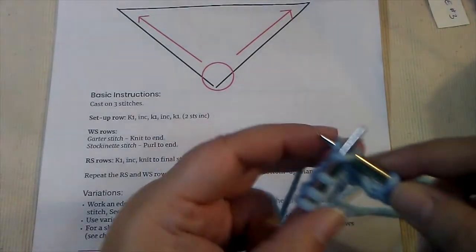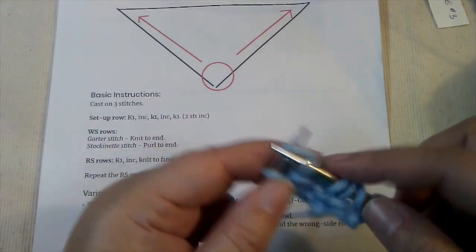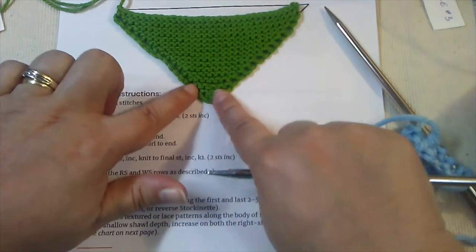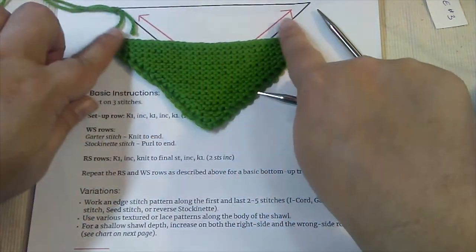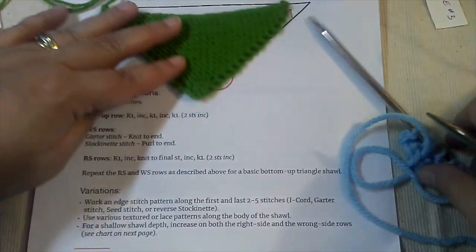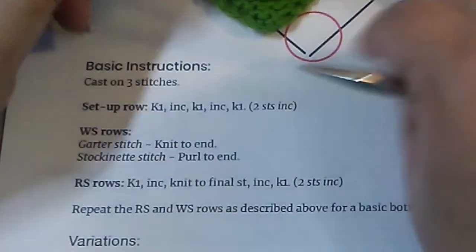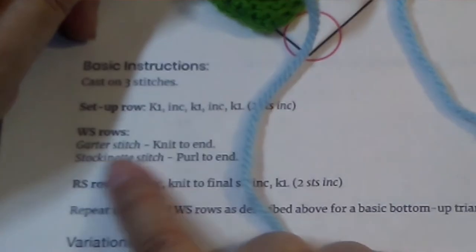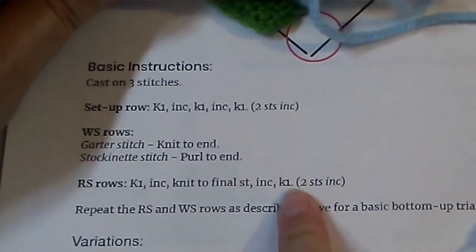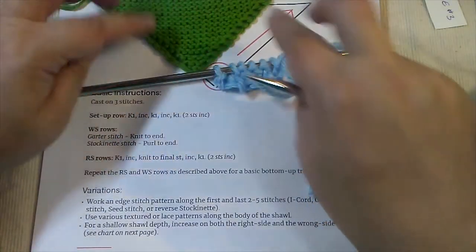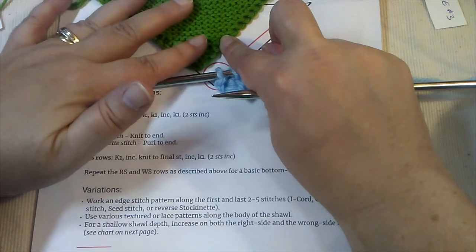Then there's our right side row. We knit one, we increase—I'll work a yarn over—knit to the last stitch and increase again. It increases on every right side row so we get a deep triangle with a short wingspan. That's all there is to set this up. Then you would continue—if the next row is a wrong side row, so I'm going to do garter—and then I would just continue doing that, increasing on those edges right there and then working knit stitches across the back of the work.